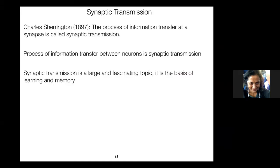Let's assume the action potential has been traveling from somewhere near the cell body all the way down to the axon. What happens next? If information is indeed carried by these voltage pulses, we need to make sure it gets transmitted to other neurons. This process is called synaptic transmission — a term coined by Charles Sherrington. Synaptic transmission is a fascinating topic, especially since we believe synapses is where all the excitement happens: synapses is where learning is initiated.